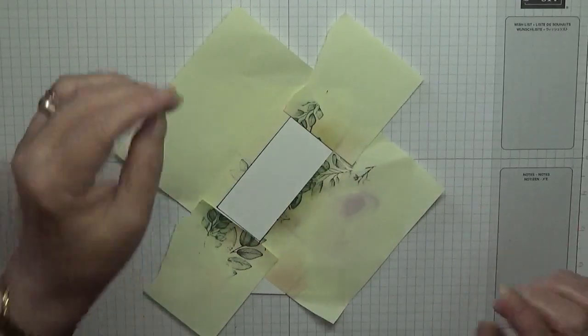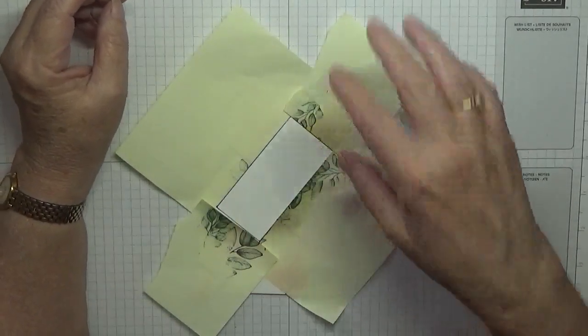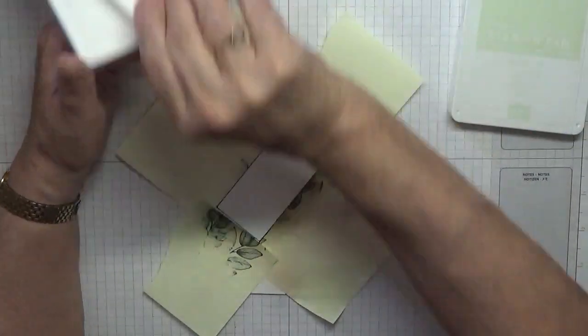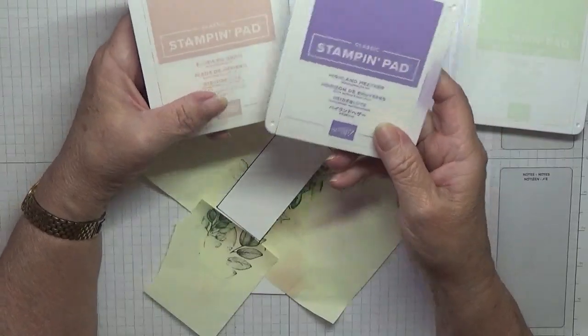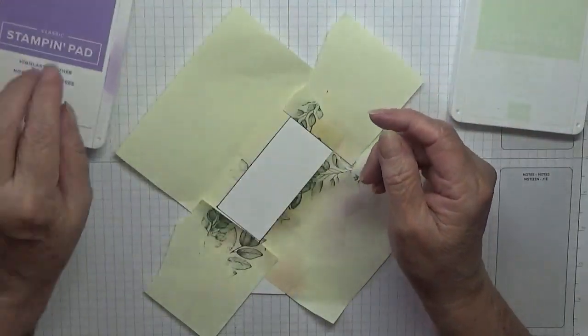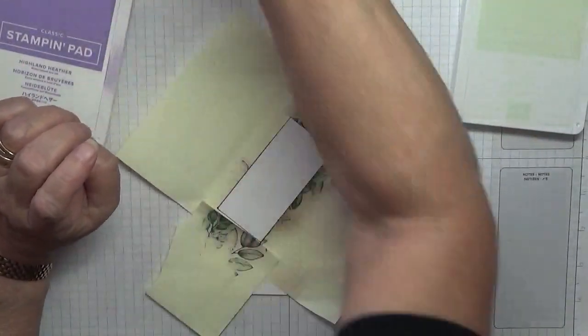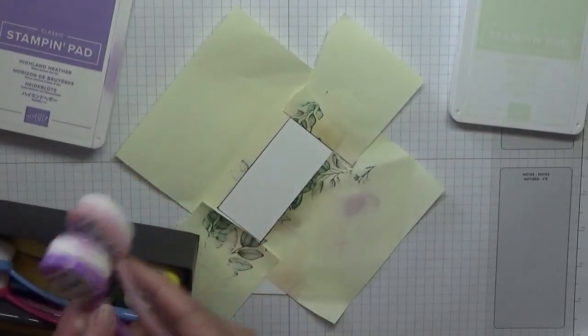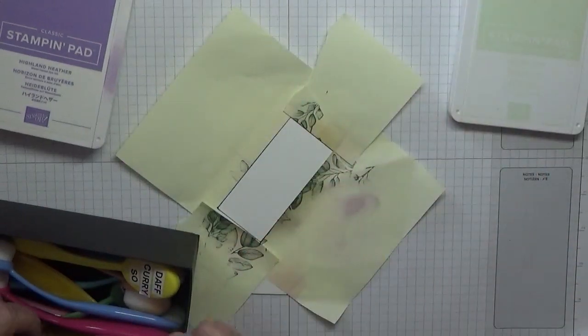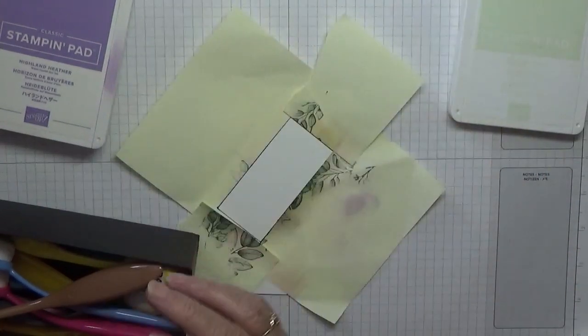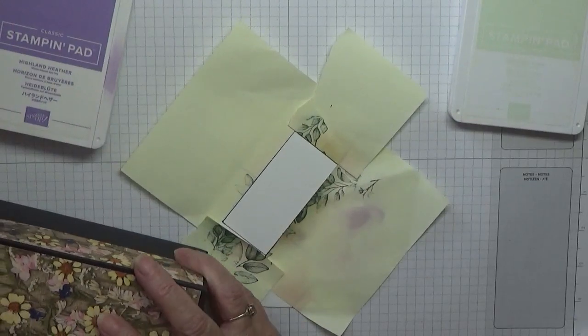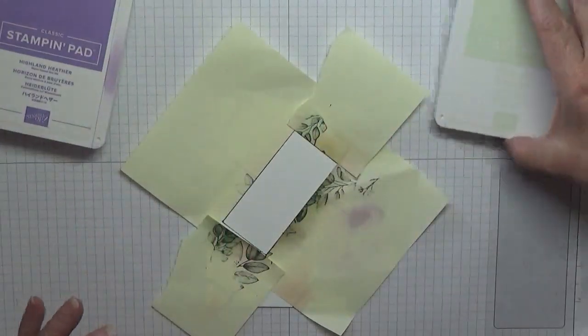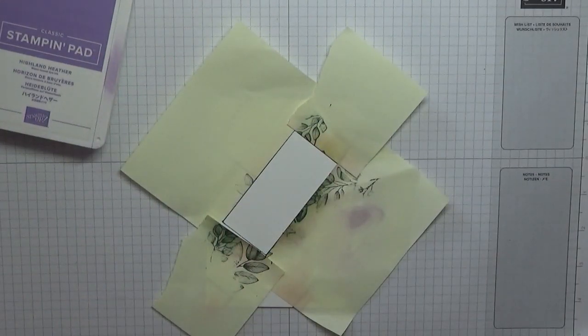Then we want to pick the colors we're going to mask with Blending Brushes. We've got Soft Sea Foam, Blushing Bride, and Highland Heather. So I'll just get the brushes out that I need for them. Blushing Bride, Highland Heather, Soft Sea Foam - that was easy, all at the top.